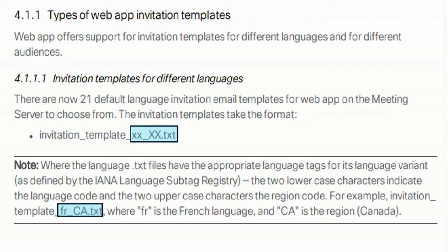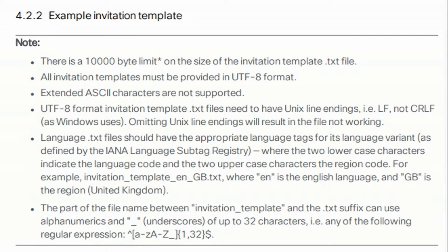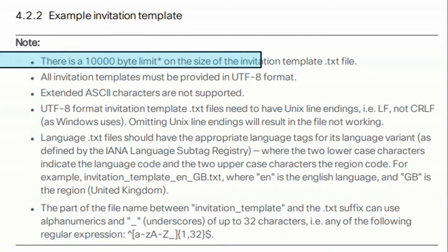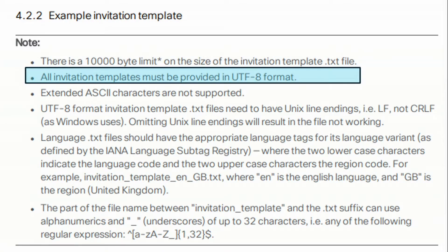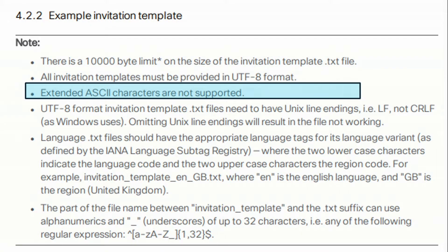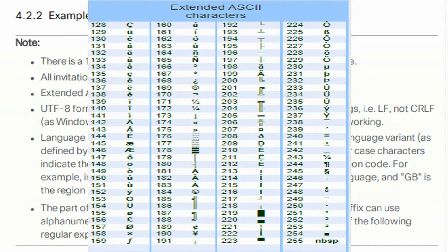This is the IANA language sub-tag registry method. For instance, fr_CA.txt, where lowercase 'fr' represents French and uppercase 'CA' represents the region Canada. When we write the invitation template, there are a set of rules governing how to configure and format the text files. First, there is a 10,000 byte limit on the invitation_template.txt file size. All invitation templates must be provided in UTF-8 format — it's important to use Notepad++ and ensure your text files are saved in UTF-8. Extended ASCII characters are not supported.